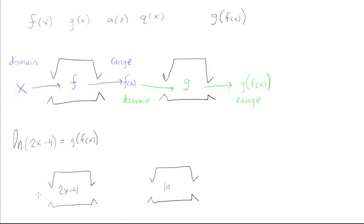So, we have, let's see, we'll input our domain, which is x, and we will get out our output, which is f of 2x minus 4. And then we'll use that as our domain, and input it into here, and we get out the ln of 2x minus 4.